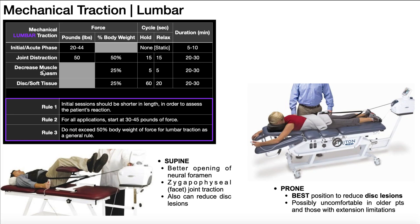To decrease muscle spasm, the force will be based on the person's body weight — either a quarter or 25% of their body weight. The hold and relax will be five seconds on, five seconds off for 20 to 30 minutes total. For disc protrusions and soft tissue stretching — similar to low load long duration stretching — we also use 25% of the individual's body weight, with a hold of 60 seconds and a relax of 20 seconds, for a total of 20 to 30 minutes.